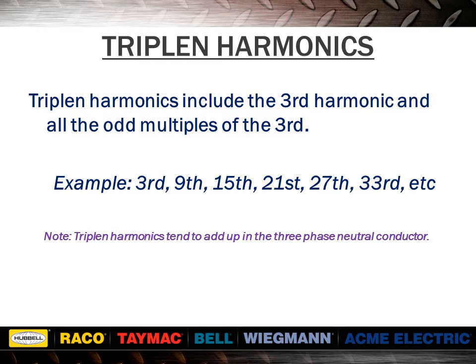Triplin harmonics include the third harmonic and all the odd multiples of the third. For example, the third, ninth, fifteenth, twenty-first, twenty-seventh, thirty-third, and so forth.